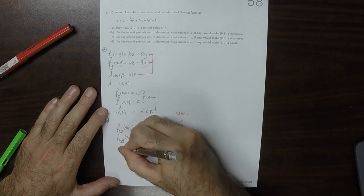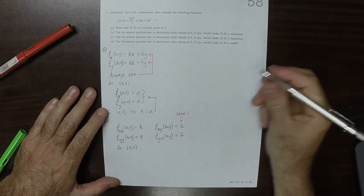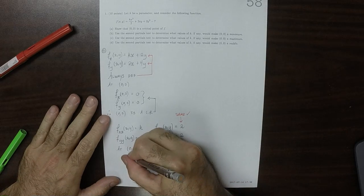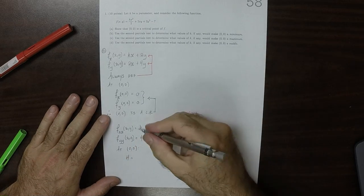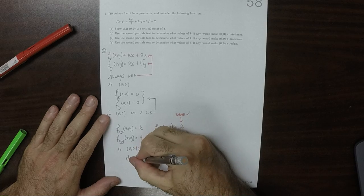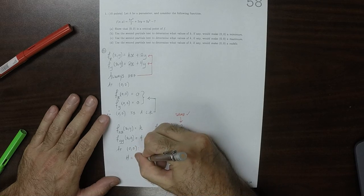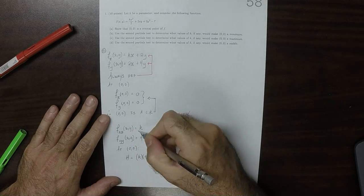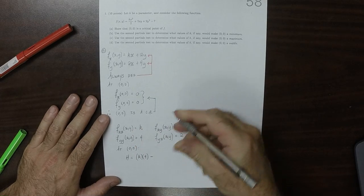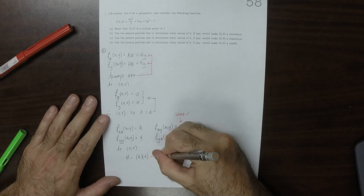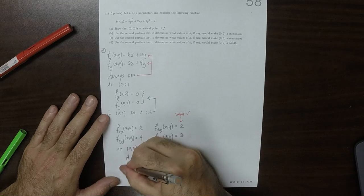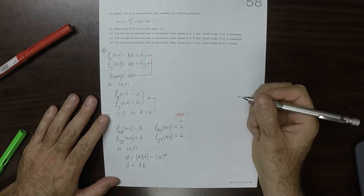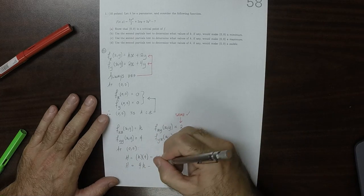And at the origin, the classifier h, well, that's the product of the mixed partials. So that's k times 4, and then minus the product of the pure partials minus the product of the mixed partials. So 2 squared. So then h is 4k minus 4.